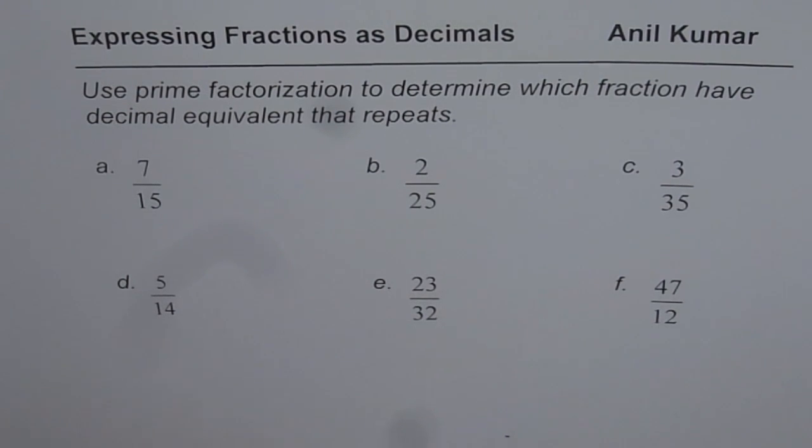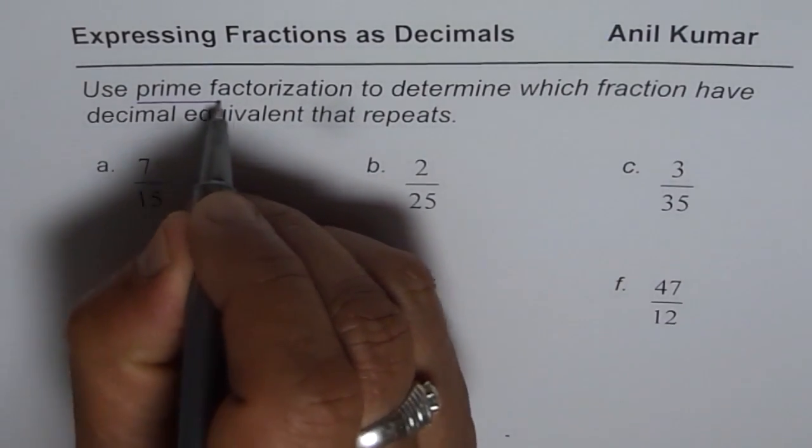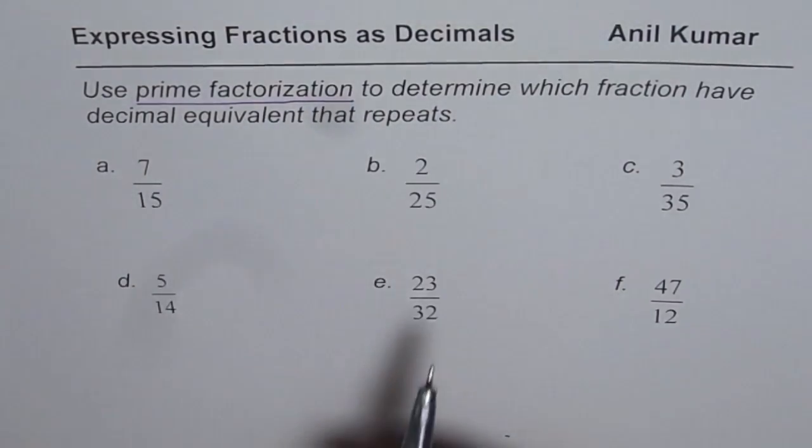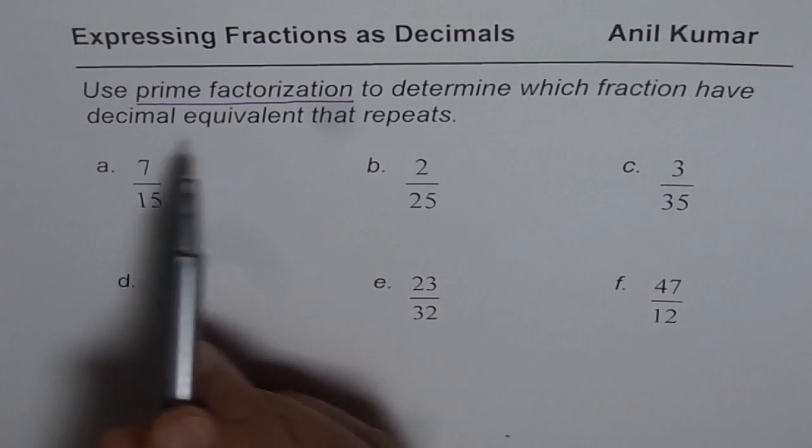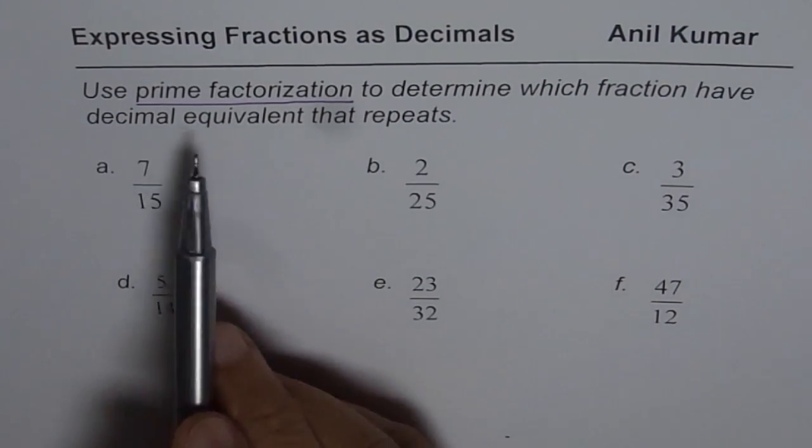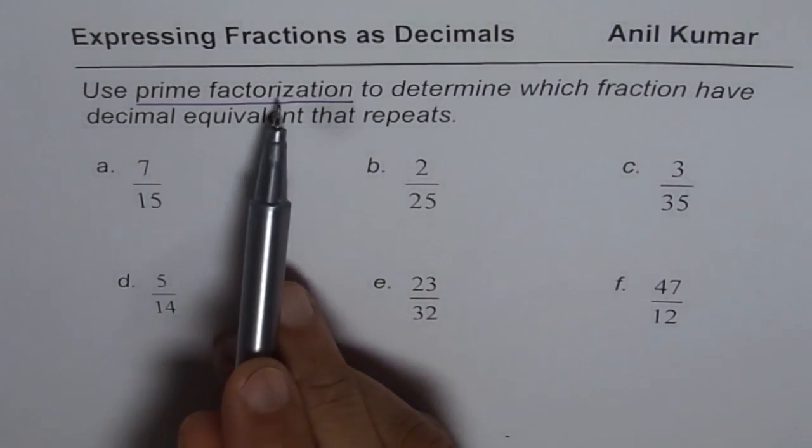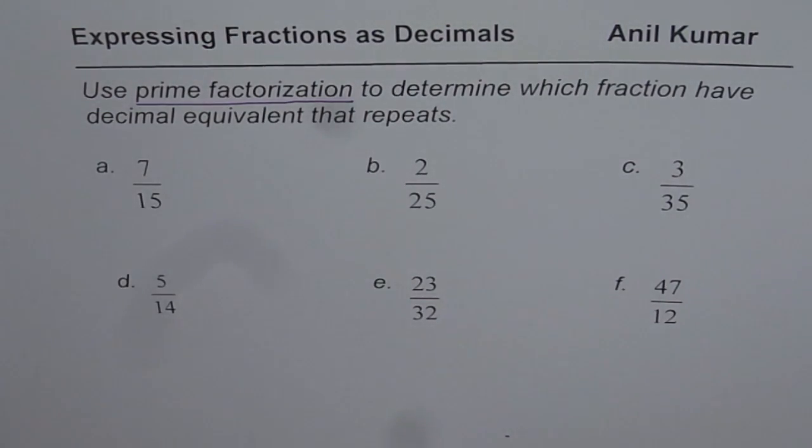So let's look into this question once again. Use prime factorization to determine which fractions have decimal equivalents that repeat. Prime factorization is a process by which we write each number as a product of its prime factors.